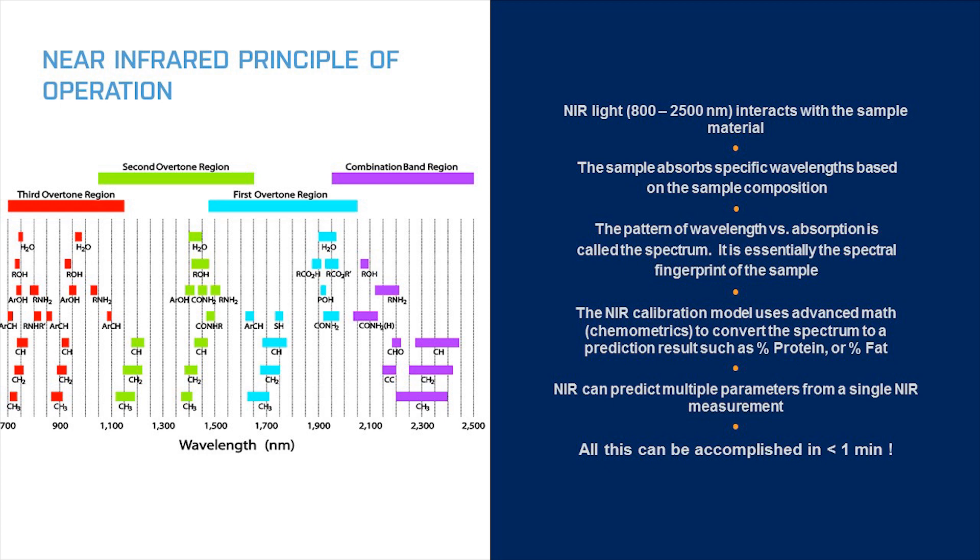For example carbon hydrogen bonds associated with fats, nitrogen hydrogen bonds associated with protein, or oxygen hydrogen bonds found in water all absorb in specific wavelength locations and the intensity of the absorbance corresponds to the concentration within the sample.